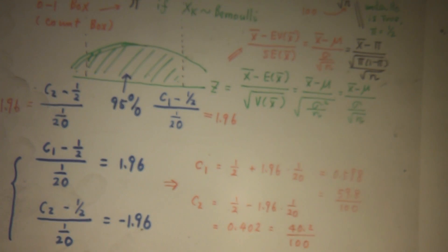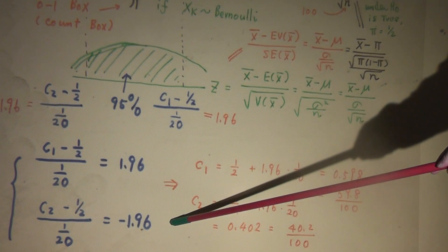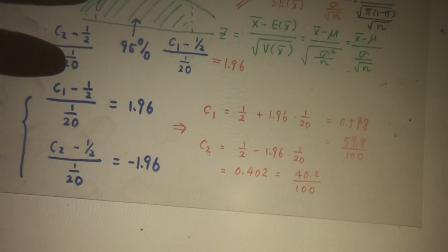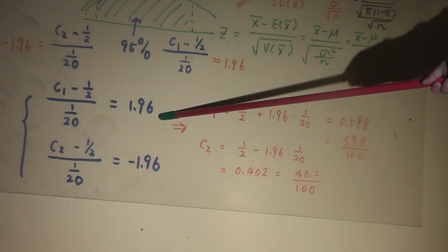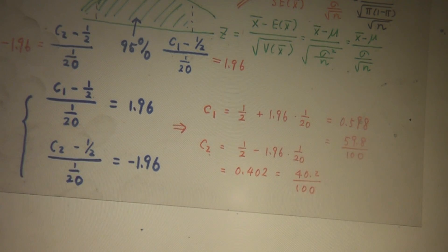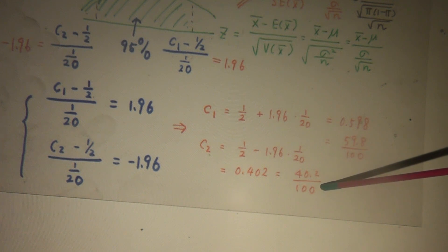So you have two linear equations to solve. The top one: C1 minus one-half over 1 over 20 equals 1.96. And the bottom one: C2 minus one-half divided by 1 over 20 equals minus 1.96. We solve for C1 and C2, and we find C1 is 0.598 and C2 is 0.402 (40.2 over 100).